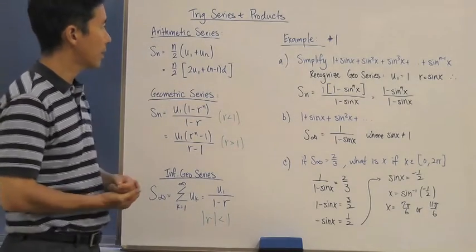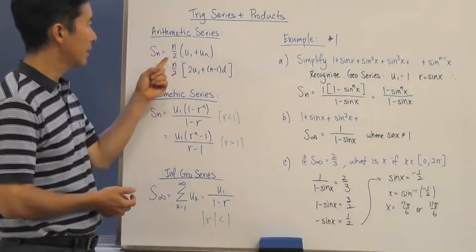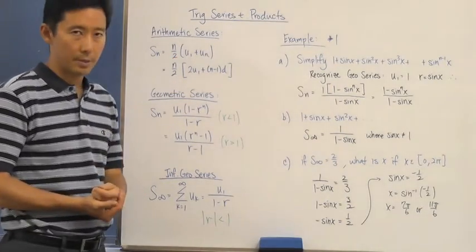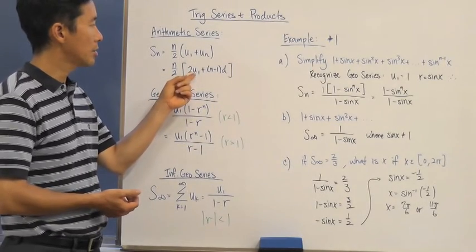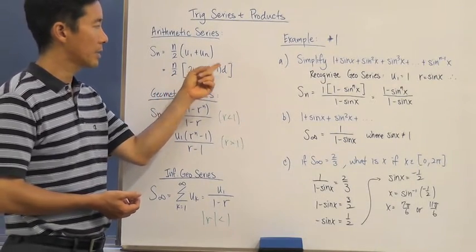So remember that our arithmetic series is going to be either n over 2 times u sub 1 plus u sub n, or n over 2 times the quantity 2u sub 1 plus n minus 1 times d.